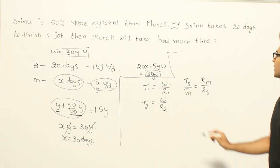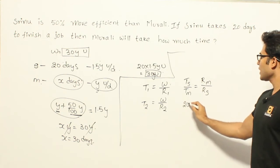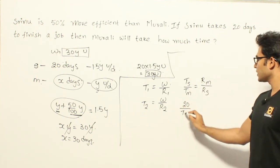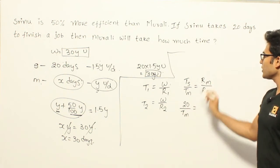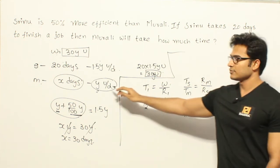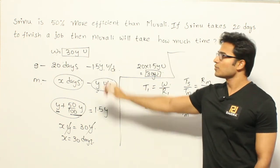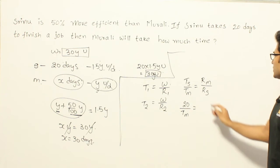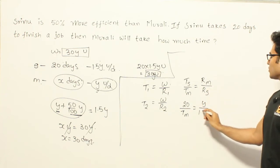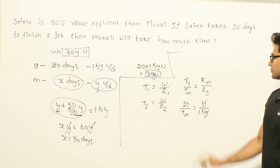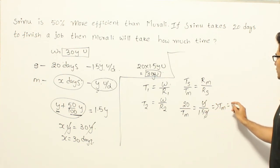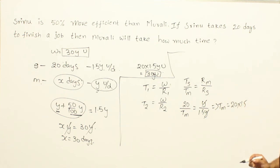Now it is already given that time taken by Sreedoo is 20 and we don't know the time taken by Murali. Let's assume that the time taken is Tm. If you assume that rate of Murali is Y, then rate of Sreedoo will be 1.5Y. So the time taken by Murali will be equal to 20 into 1.5, which gives 30 days.